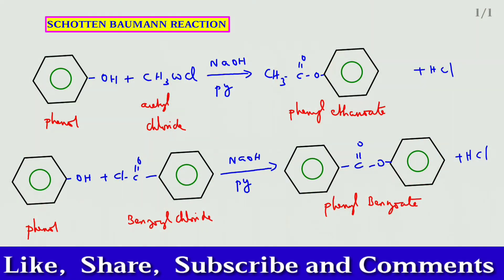Hello students, in this video we are going to discuss about Schotten-Baumann reaction. What is Schotten-Baumann reaction? When phenol is treated with acid chlorides, it gives esters. The acetylation and benzoylation of phenol are called Schotten-Baumann reaction.